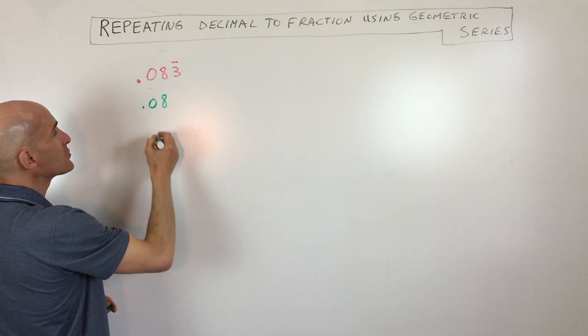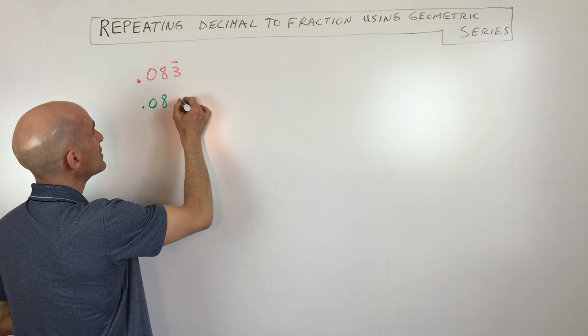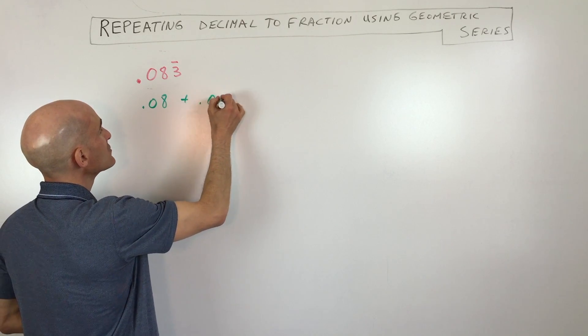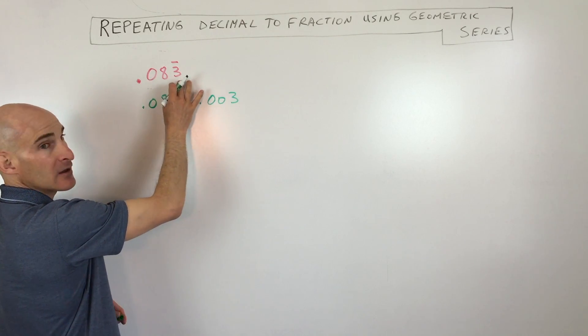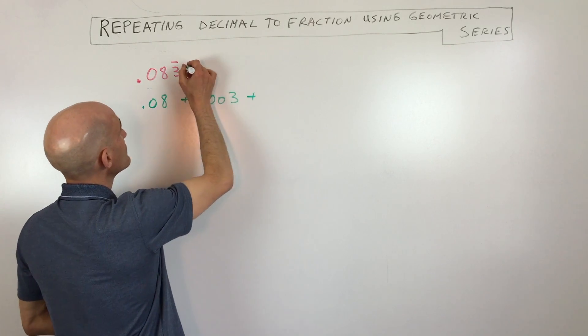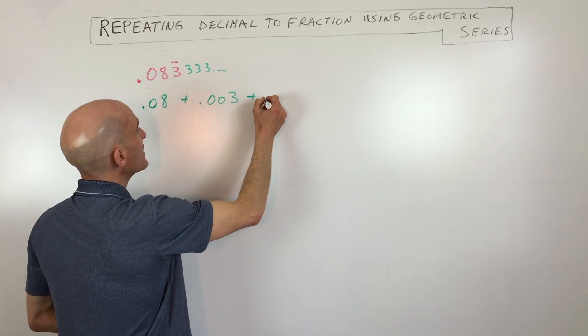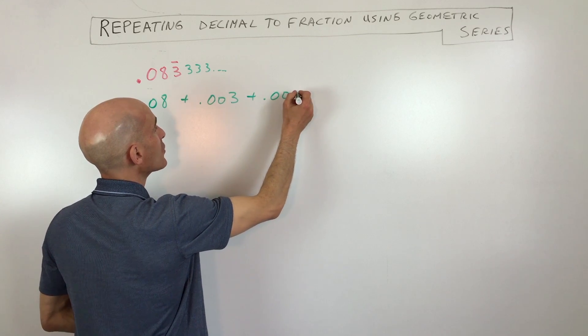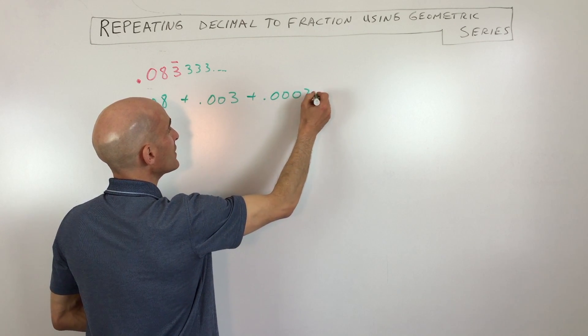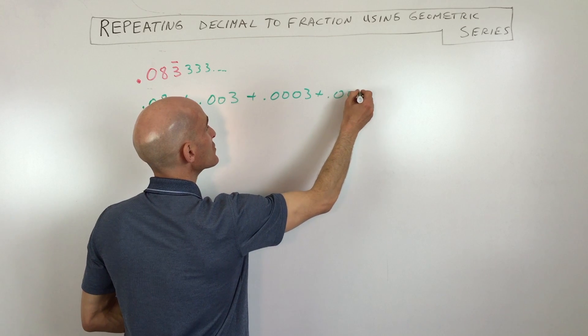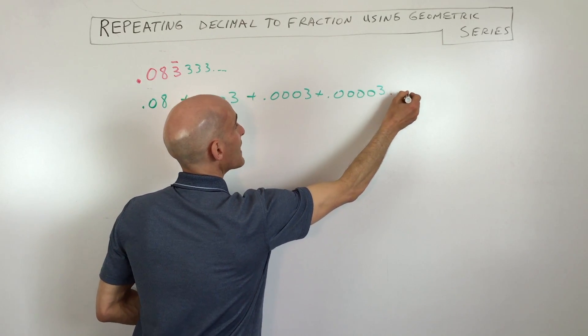So just write this as 0.08. And what we're really interested in here is 0.003, plus, because remember this keeps going, 3, 3, 3, this next term is going to be 0.0003 plus 0.00003 dot dot dot.